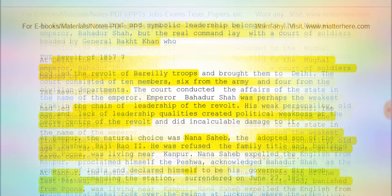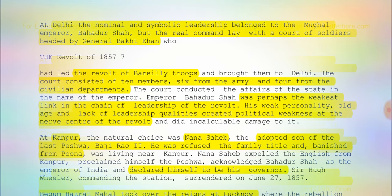Nana Sahib had been refused the family title and banished from Pune, and was living near Kanpur. He declared himself as the governor under Emperor Bahadur Shah. Sir Hugh Wheeler, commanding the station, surrendered on June 27, 1857. Baji Rao II is the character portrayed by Ranveer Singh in the film Bajirao Mastani.